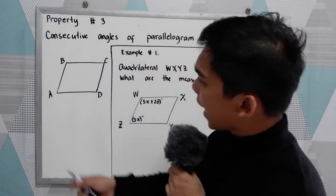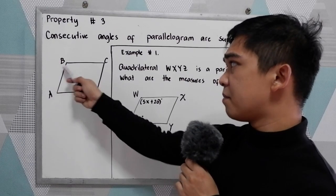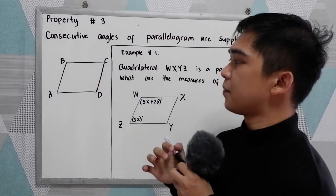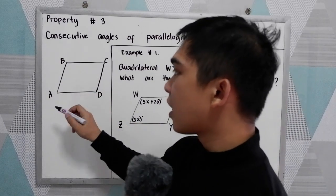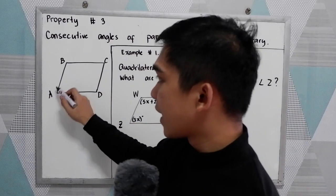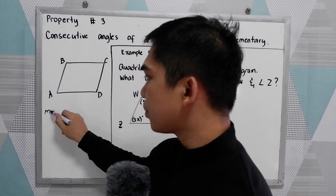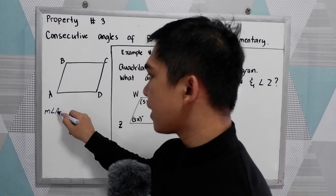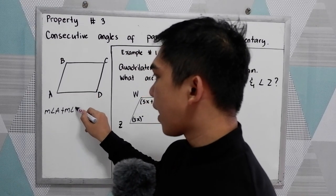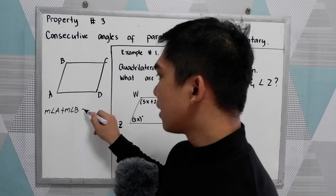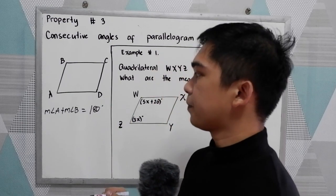So let's say we have our parallelogram A, B, C, and D. The consecutive angles are A and B, so the measure of angle A plus the measure of angle B is equal to 180 degrees.